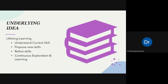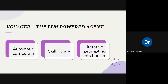The underlying idea behind this paper is lifelong learning, where we look at the agent's current skills, give it new skills to learn, allow it to refine its skills, and enable continuous exploration. The key idea is that learning doesn't stop with a particular task — it gets extended across multiple tasks. That is the core concept behind this paper.